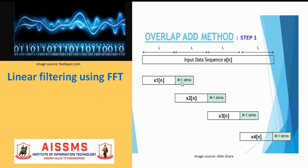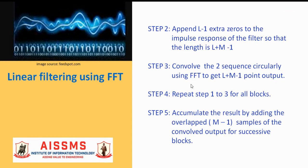Step 1 of this algorithm states that append L minus 1 extra zeros to the impulse response of the filter. Step 3 is to convolve the two sequences circularly using FFT to get L plus M minus 1 point output.